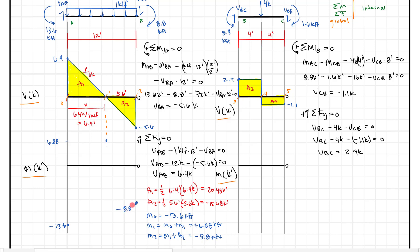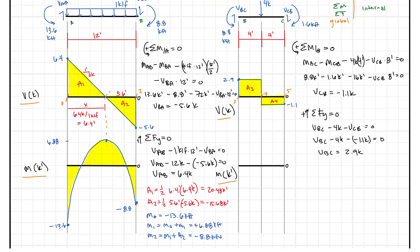So these are our three points on our curve. The positive moment here is not going to control the overall beam design, but it is significant. We can plot a parabola here to make this look about right. And there's our moment diagram for beam AB, shaded in.